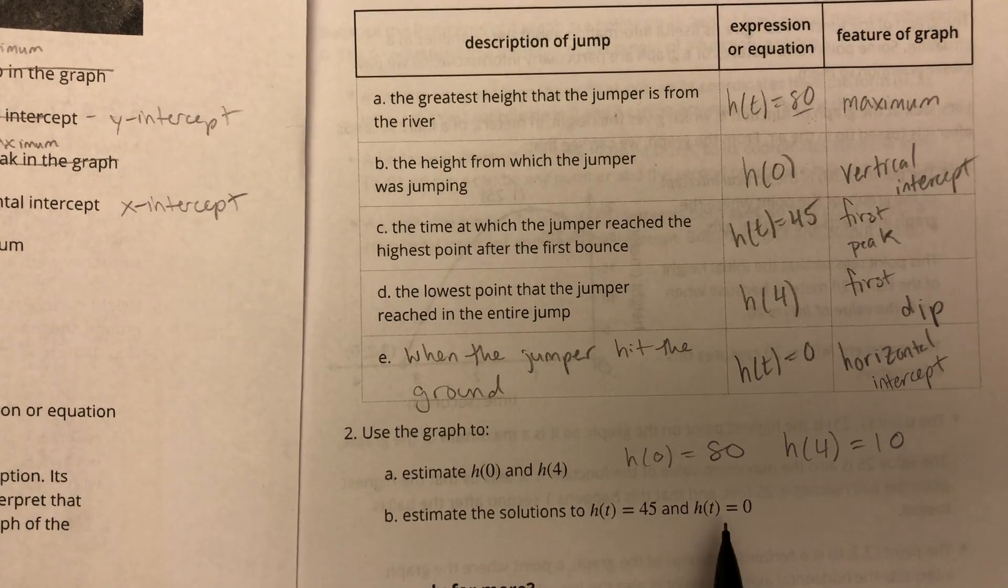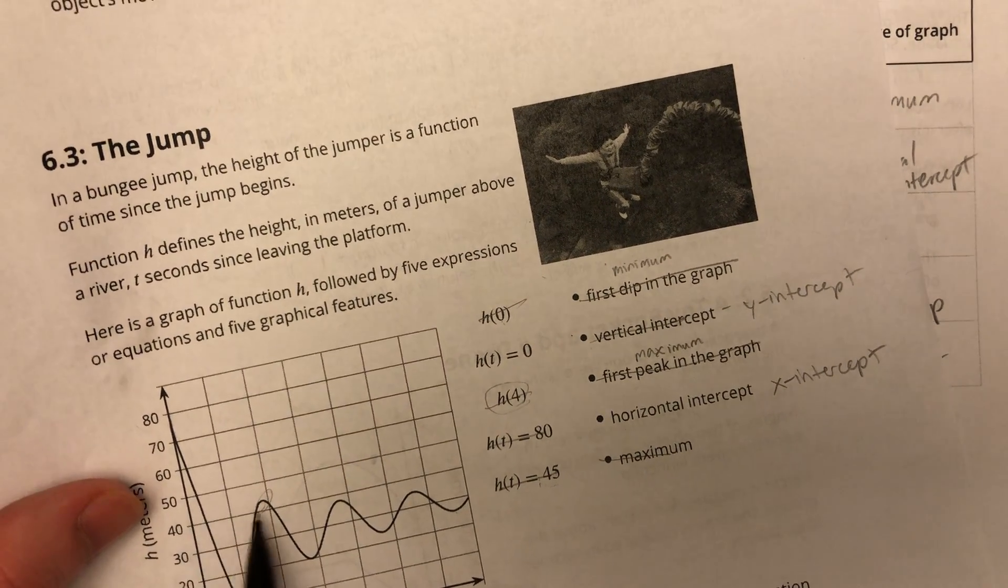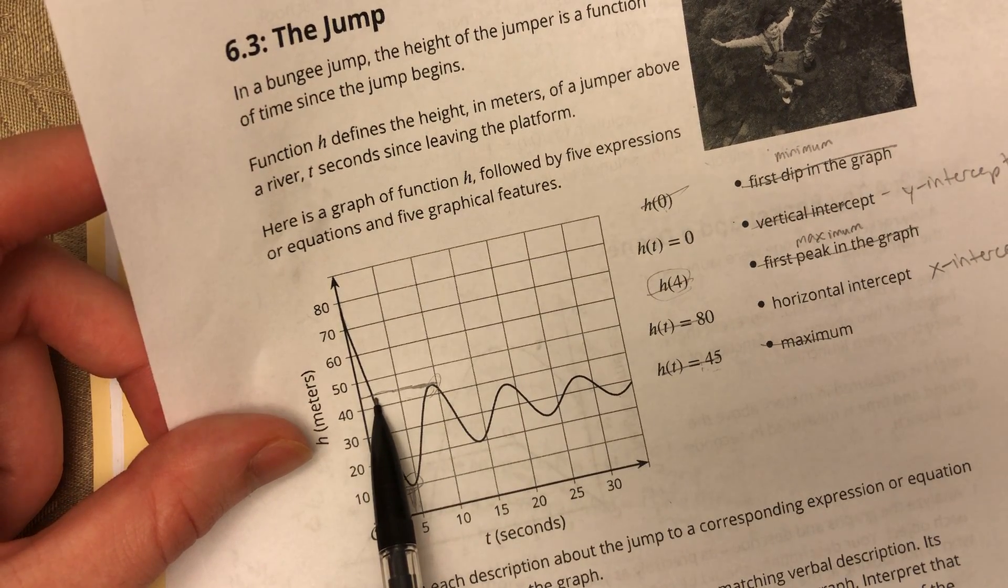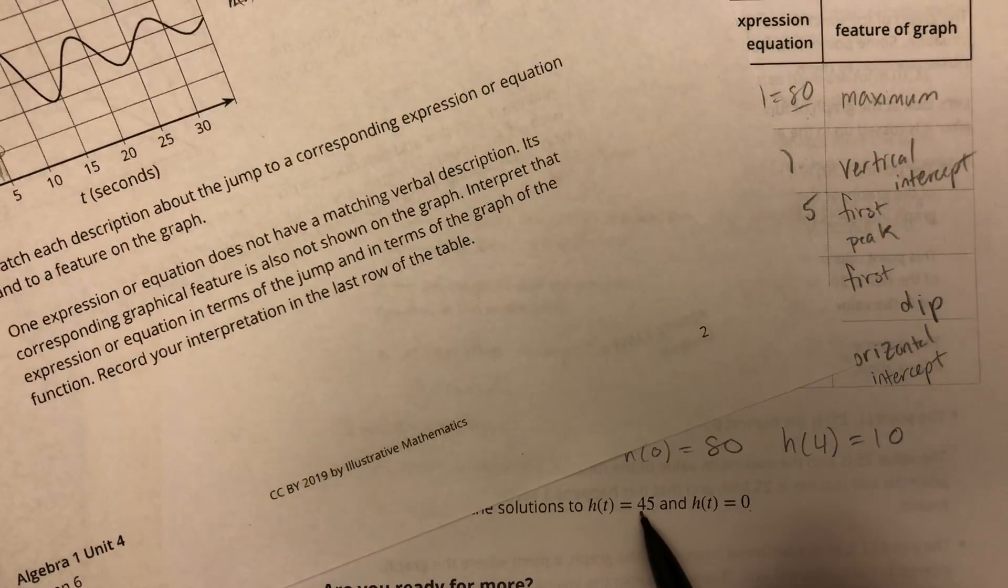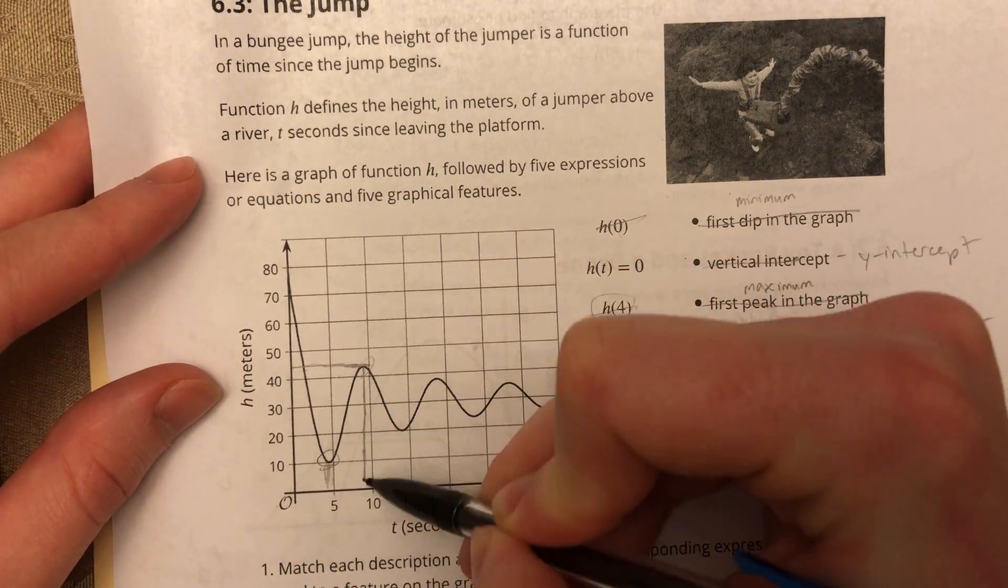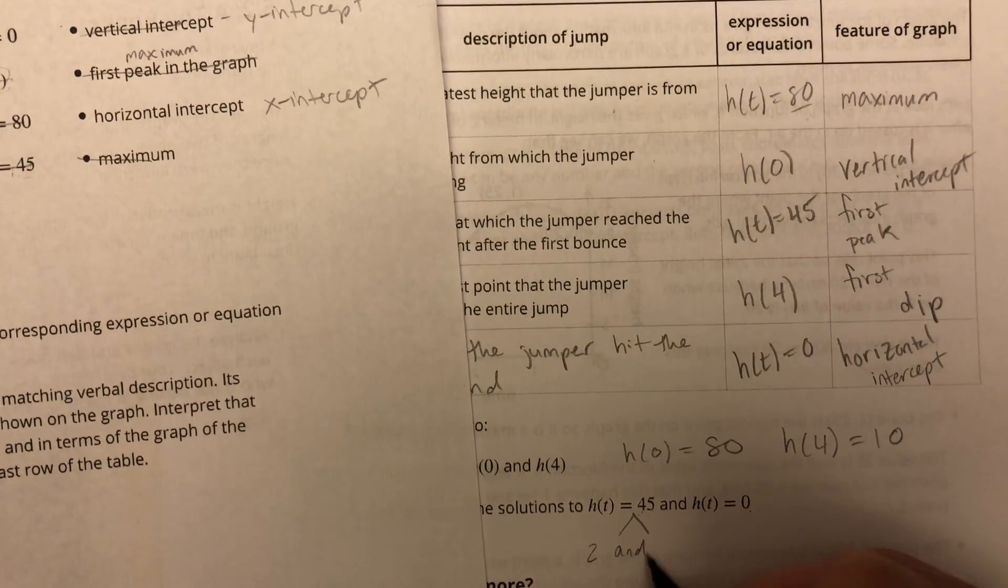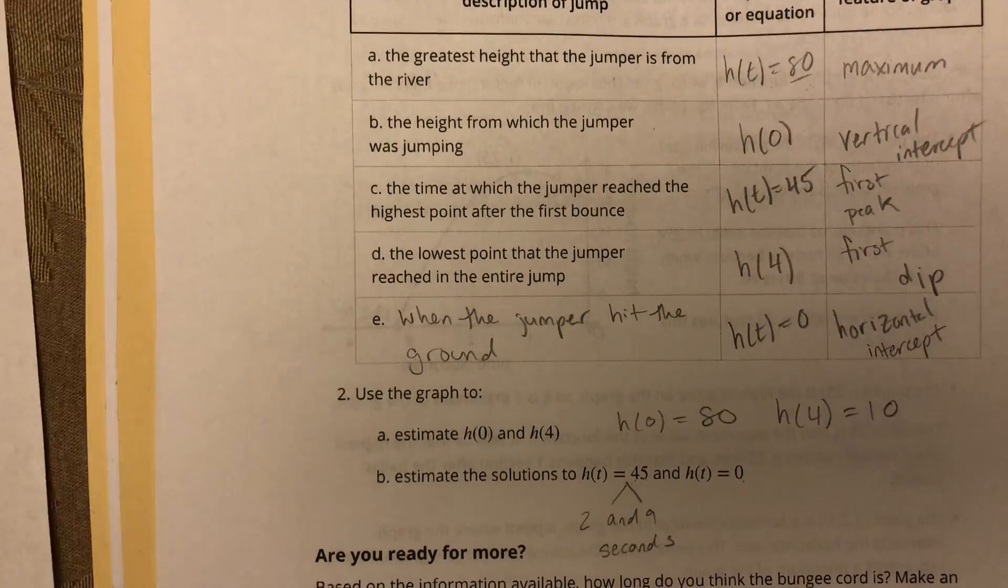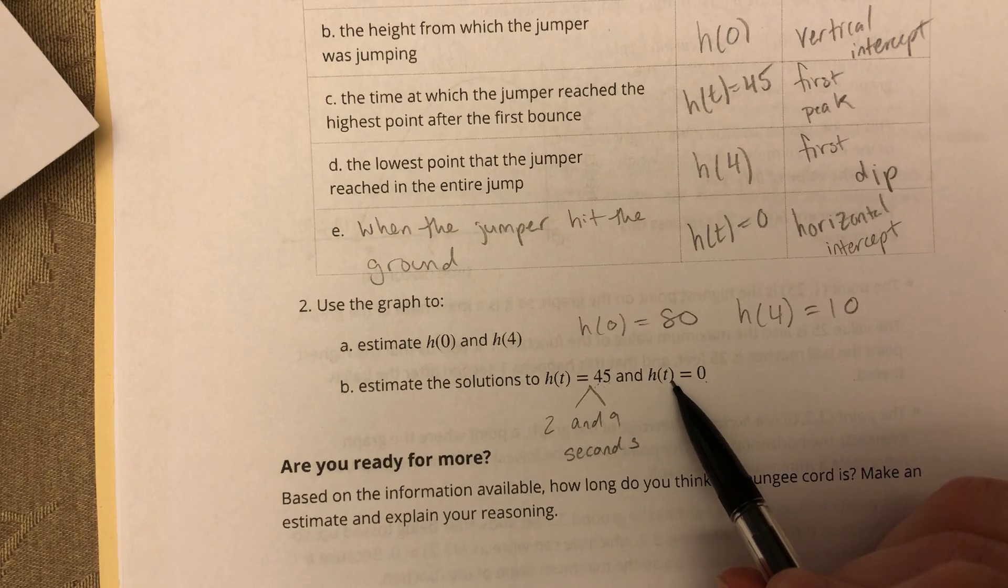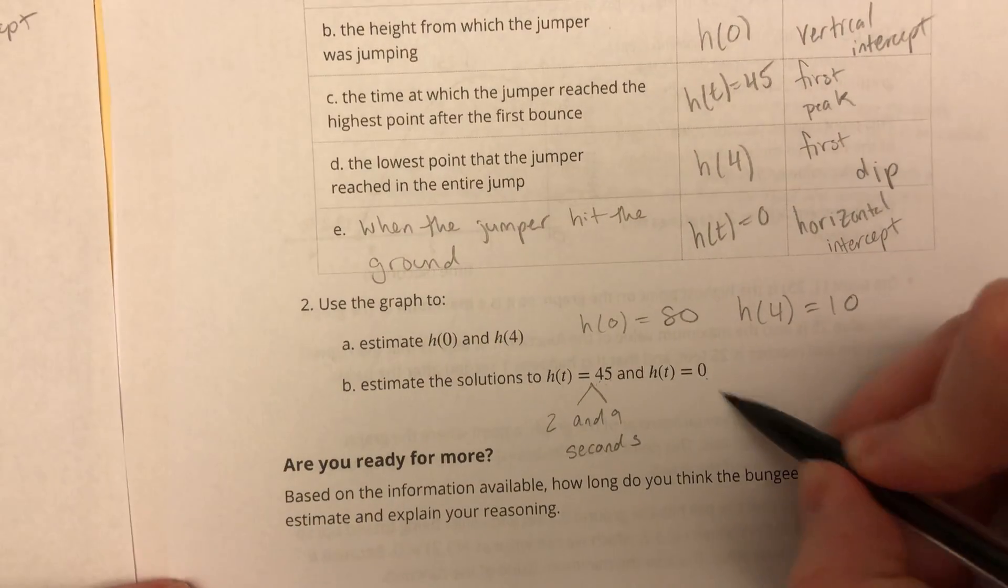Alright. Estimate the solutions to H of T equals 45 and H of T equals zero. So they're asking for the T values now. So if I'm looking at 45 here, well, that's actually kind of a tricky question because you could argue that the height is 45 at two different points. So for this one, I would say that for one, we have it when X is equal to about, let's see if I come down here, let's say it's about nine seconds. And then right here, that looks like it's about two seconds. So I would say two and nine seconds. So we've got two different answers for that part. Alright. H of T equals zero. That's when Y is equal to zero. So again, this is sort of like, if I'm looking at this graph, it never hits zero. So I would say no solution.